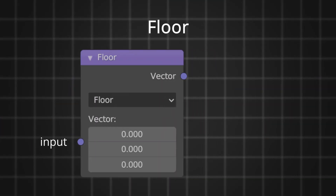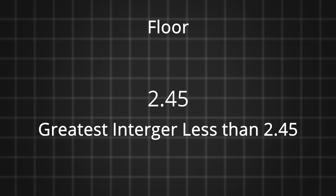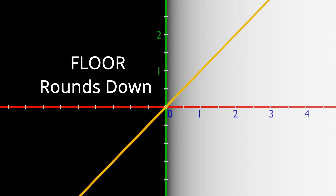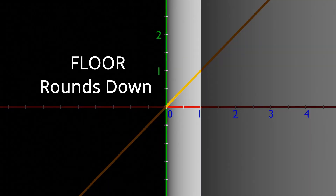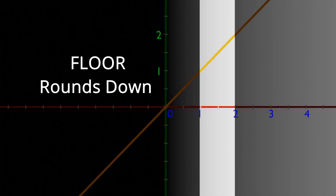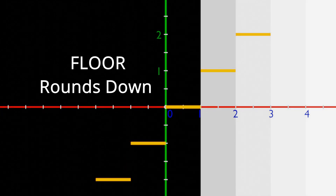The floor function takes a number as input and outputs the greatest integer that is less than or equal to that number. For example, for 2.45, the greatest integer less than 2.45 is 2. We can also say floor rounds down the number. Graphically, if floor takes a gradient from 0 to 1, it rounds all values down to 0. If it takes a gradient from 1 to 2, it rounds values down to 1, giving a pixelated output.